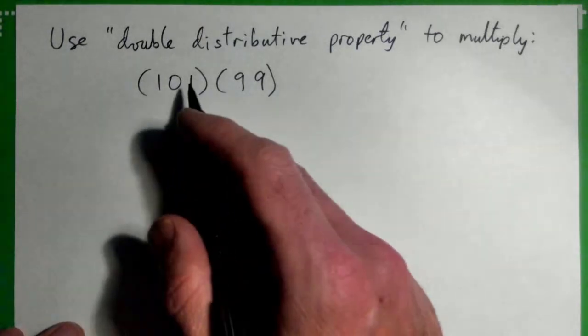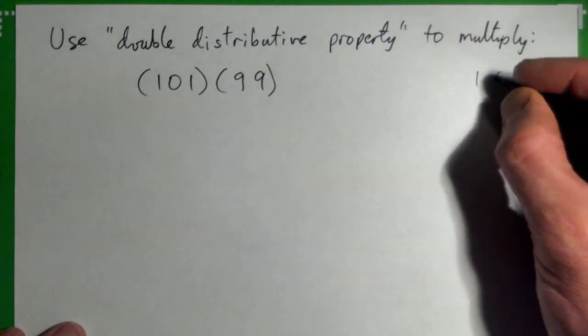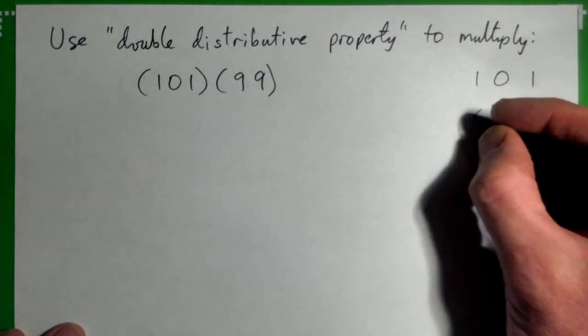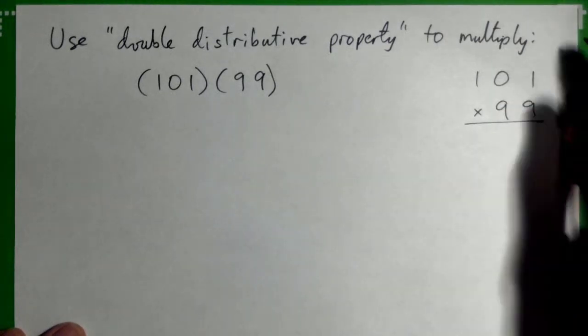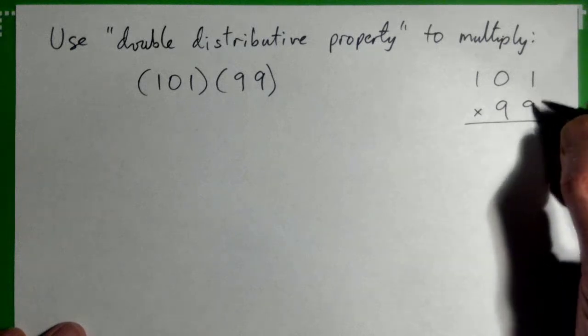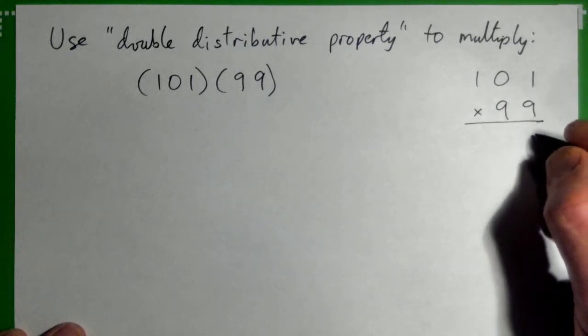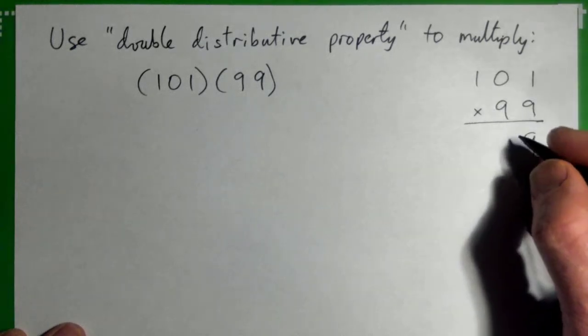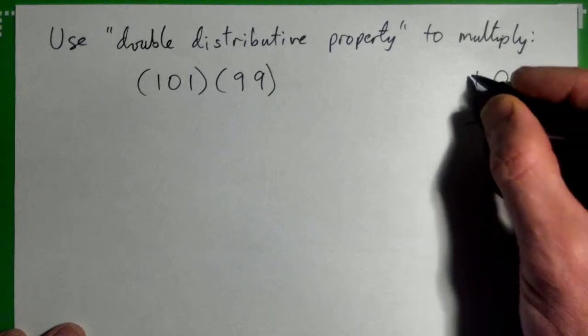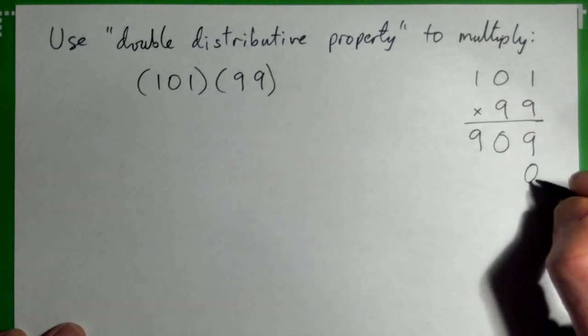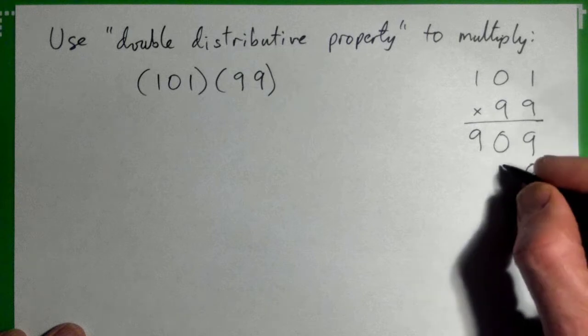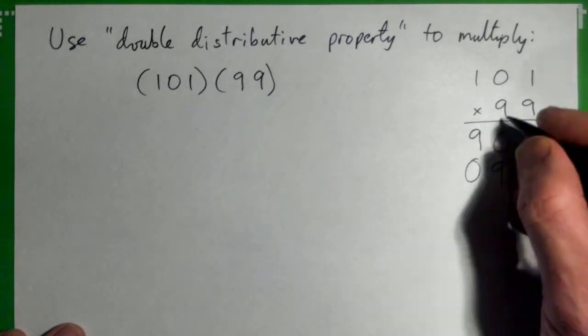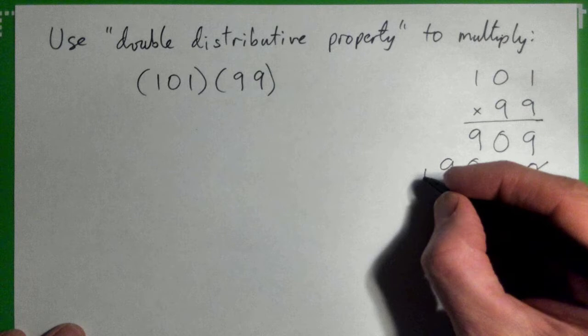First of all, I'm quickly going to just use long multiplication to multiply these. So let's talk me through this: nine times one is nine, nine times zero is zero, nine times one is nine, then put down a placeholder zero, nine times one is nine, nine times zero is zero, nine times one is nine, and then we add.